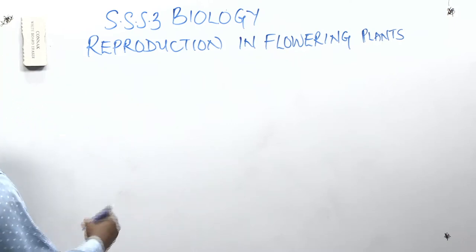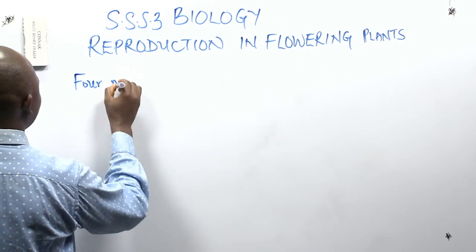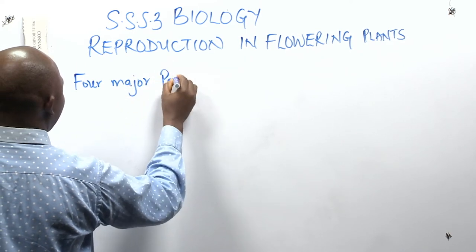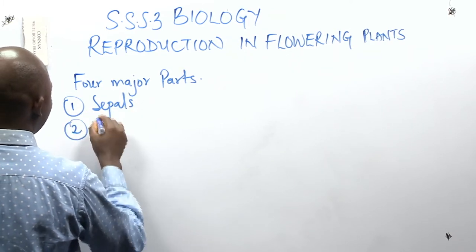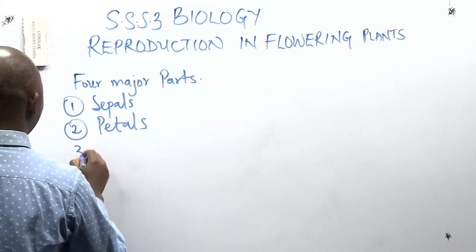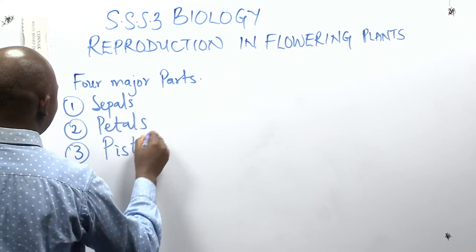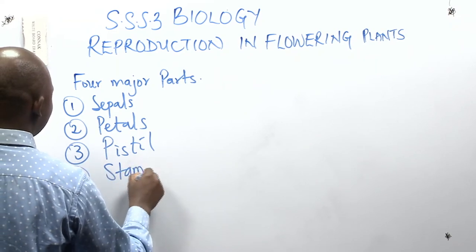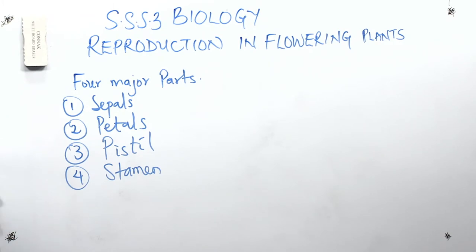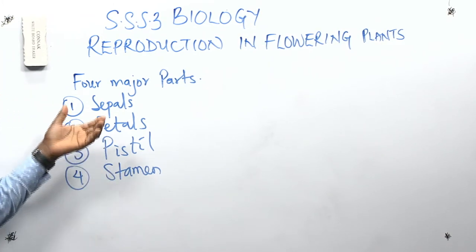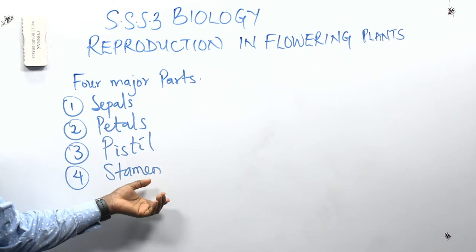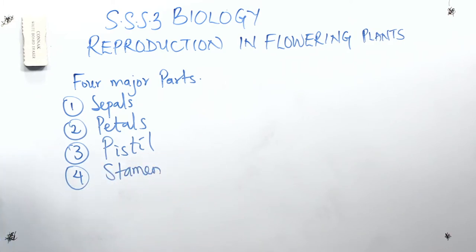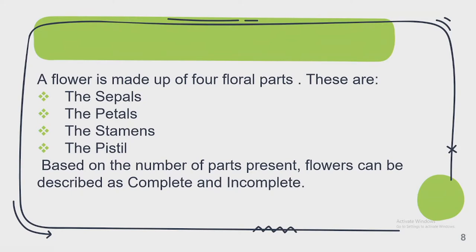These are the four major parts: we have the sepals, we have the petals, we have the pistil, and we have the stamen. These four major parts give birth to other subsidiary parts that you saw in the diagram. Let's look at these parts and what functions they perform in a flower.